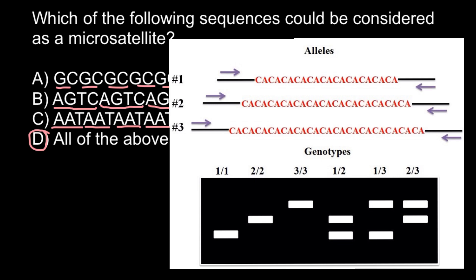Knowing such loci helps us make a genetic fingerprint of the genome. This can be used, for example, in paternity testing, or to find the unique genetic fingerprint — also called a genetic profile — of a suspect using biological material found at a crime scene.